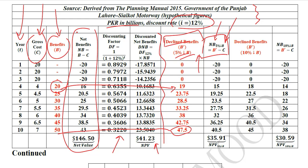There is one key assumption in sensitivity analysis: we change only one factor at a time, not multiple factors. So you can see that only the benefits are changing while the costs remain the same. After doing this net benefits calculation, we get an NPV of 35.91. You can already see there is a certain decline in the NPV. This is the NPV at a 5% decline in benefits.